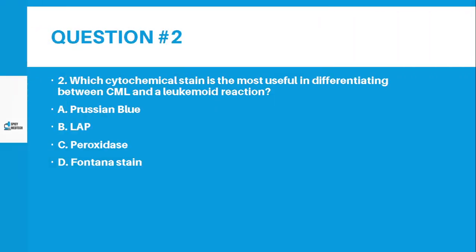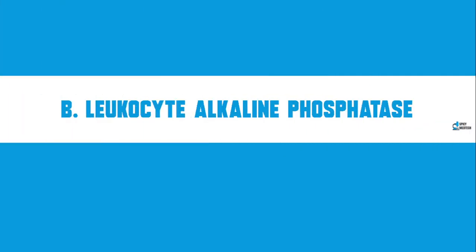Number 2: Which cytochemical stain is the most useful in differentiating between CML and a leukemoid reaction? Letter A, Prussian Blue. Letter B, LAP. Letter C, Peroxidase. Letter D, Fontana stain. The correct answer for number 2 is Letter B, Leukocyte Alkaline Phosphatase.